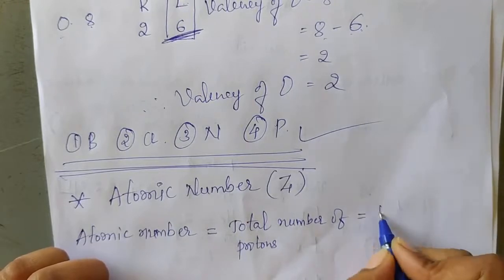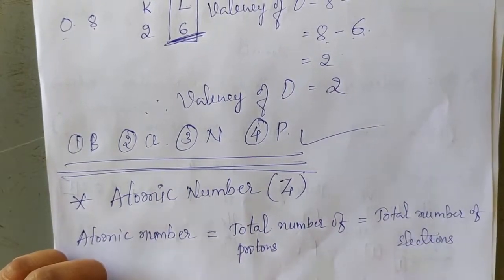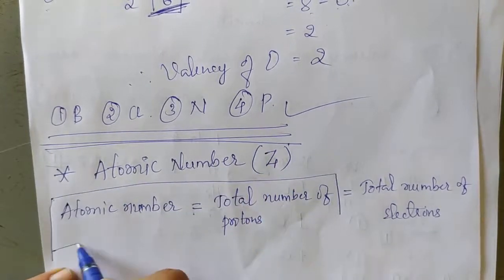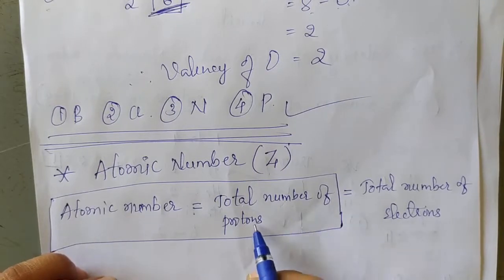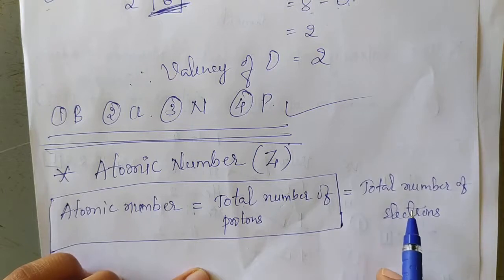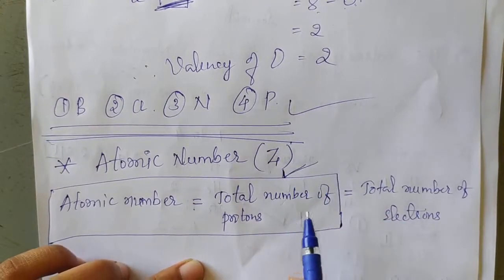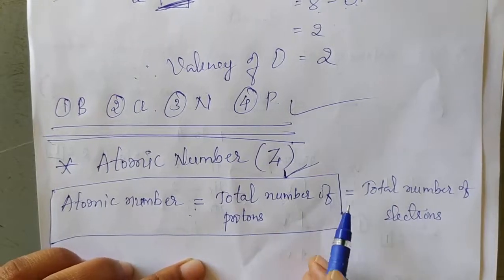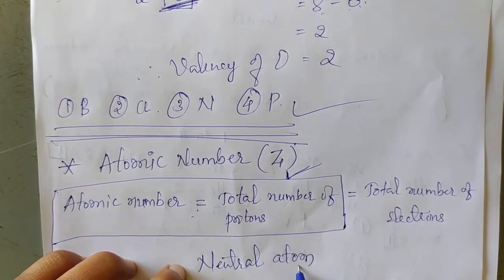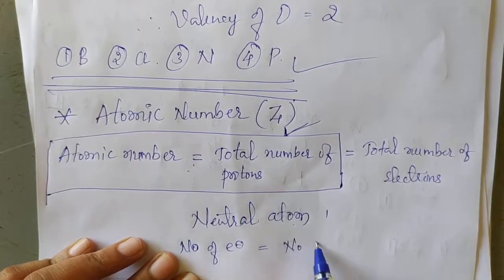Or we can also say atomic number is the total number of electrons. So whenever we are defining atomic number, we must define it like this: atomic number is nothing but the total number of protons present in the nucleus. We can also define it as the total number of electrons present in the atom is known as atomic number. But more accurately, the number of protons present in the atom is known as atomic number. In case of a neutral atom, the number of electrons is always equal to the number of protons.